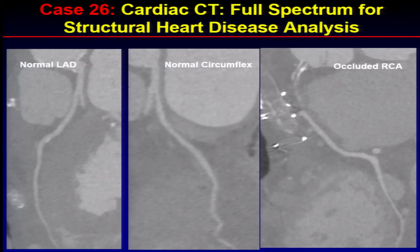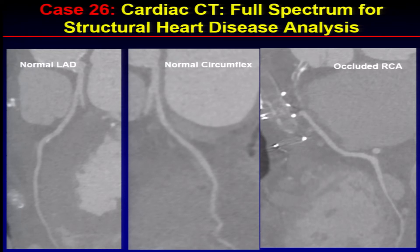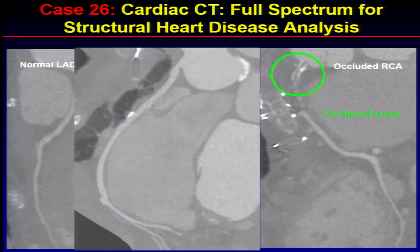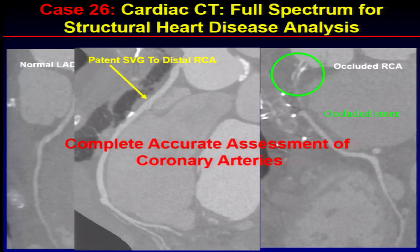CT can give you a full assessment of what's happening with the patient. We recently had a patient sent to us because of a paravalvular leak. She had a normal LAD, normal circumflex, occluded right coronary artery, and an occluded stent in the proximal right coronary artery, but had a patent bypass graft to the distal right coronary artery — giving us a complete assessment of her coronary arteries.